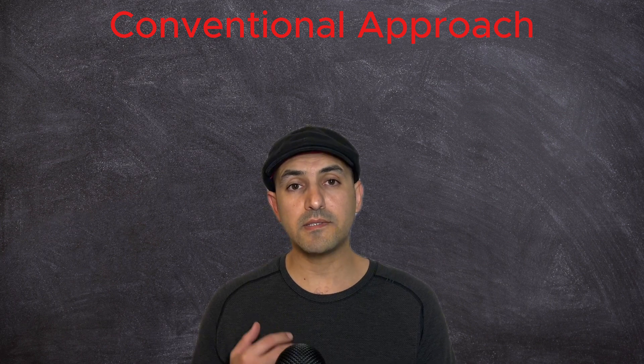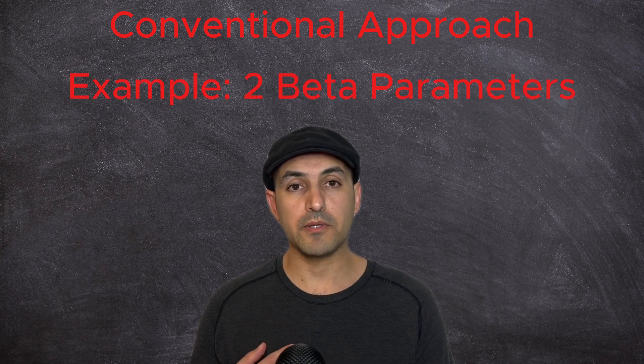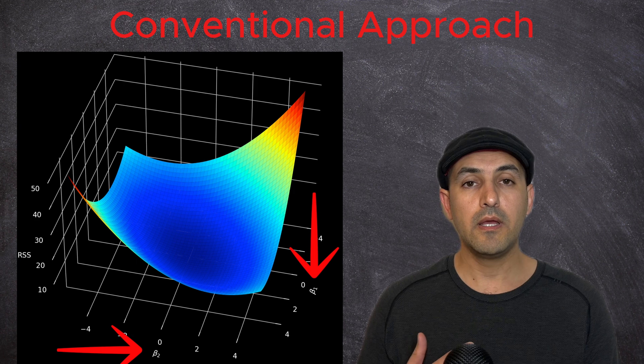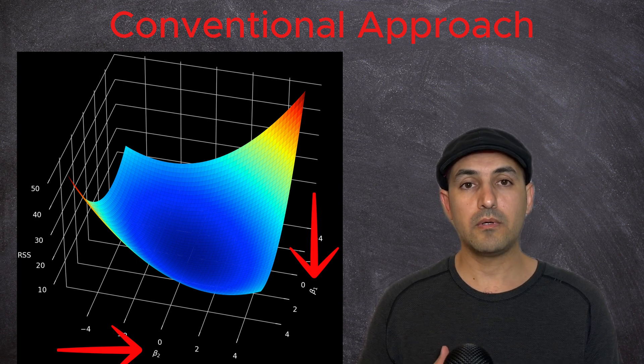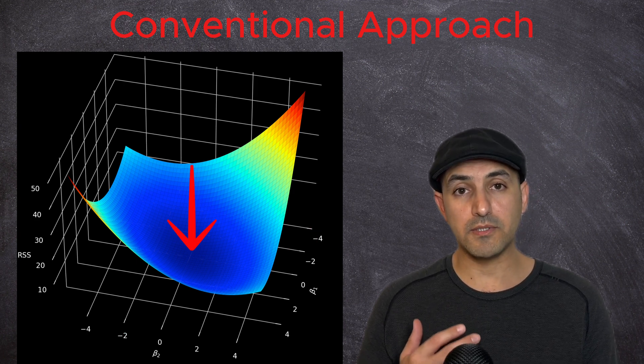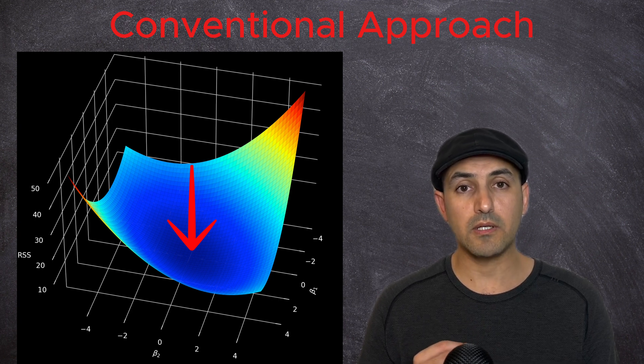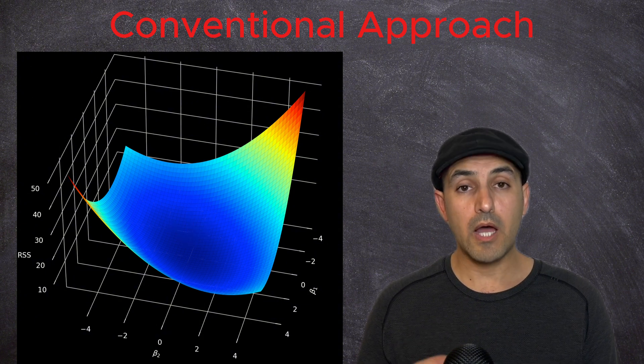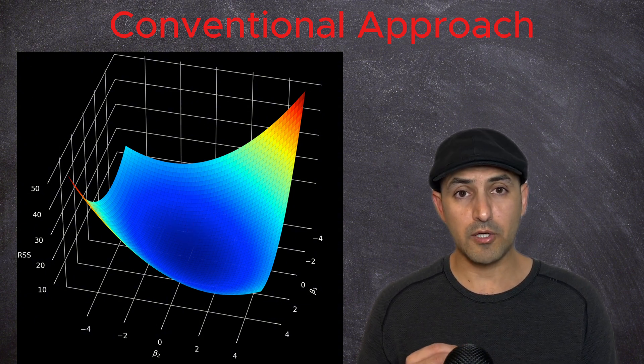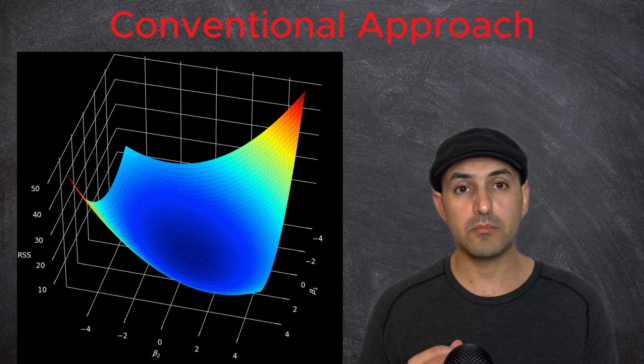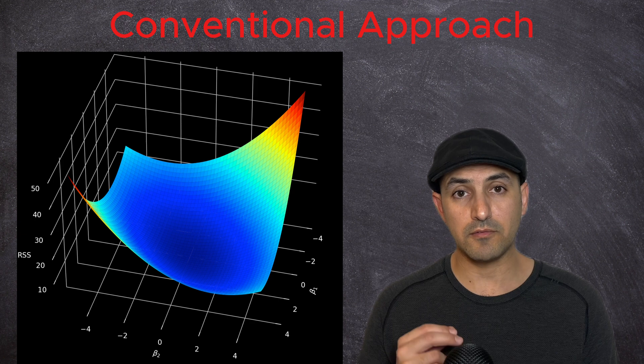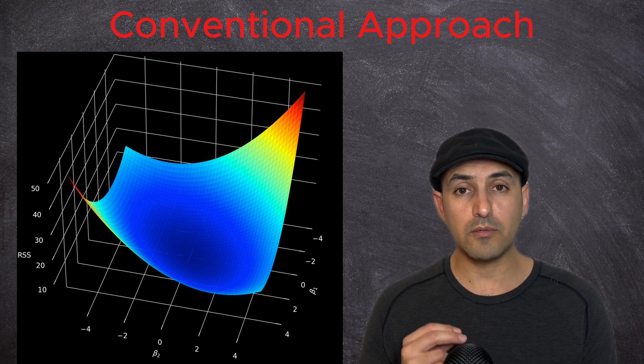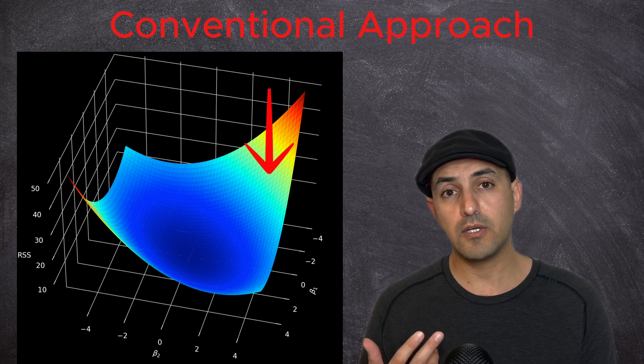For simplicity, let's assume I have only two unknown beta parameters. Let's say if I plot the loss or error function in terms of the two beta parameters, I end up with this shape. The parameters at the bottom of this well are the solutions to the minimization and are the ones I should insert into my linear regression. However, generation of this plot to find the minimum is not efficient because every single point on the surface of this plot requires one computation.